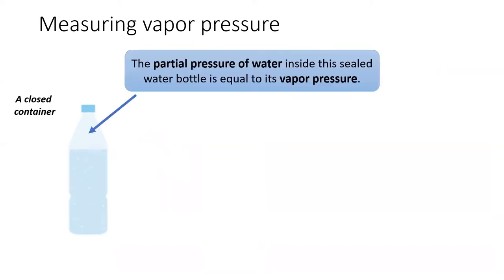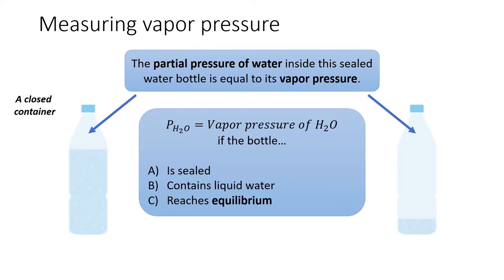To get the vapor pressure of water, all we need to do is measure the partial pressure of water in the top of the bottle. Here is another water bottle, this time with much less water in it. The cap is on, so it's also a closed system, just like our first water bottle. And even though there is less water in this bottle, the partial pressure of water in the top of the container is the same as in the first container. The partial pressure of water will equal the vapor pressure so long as the bottle is sealed, contains liquid water, and the water's evaporation condensation process reaches equilibrium.